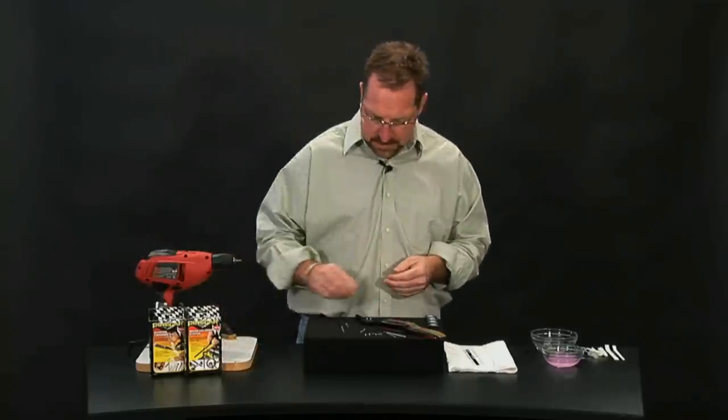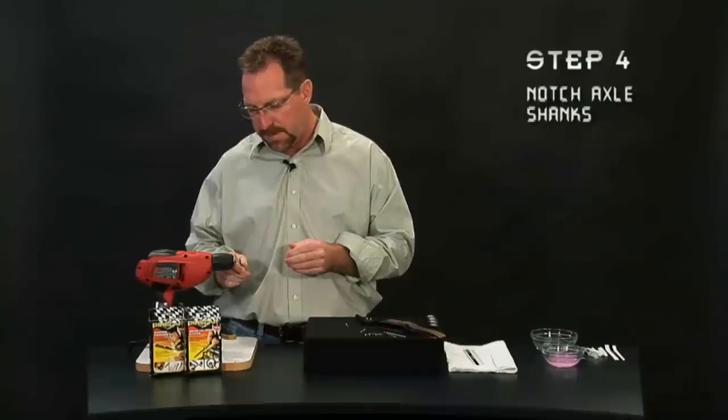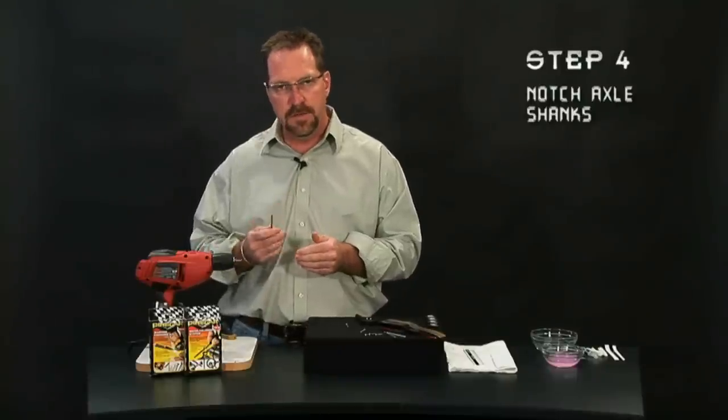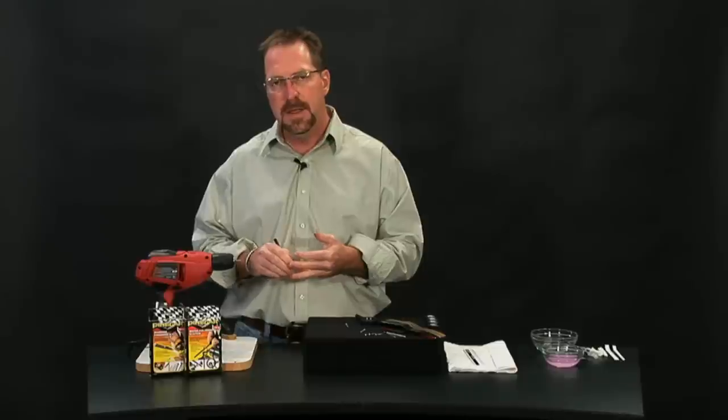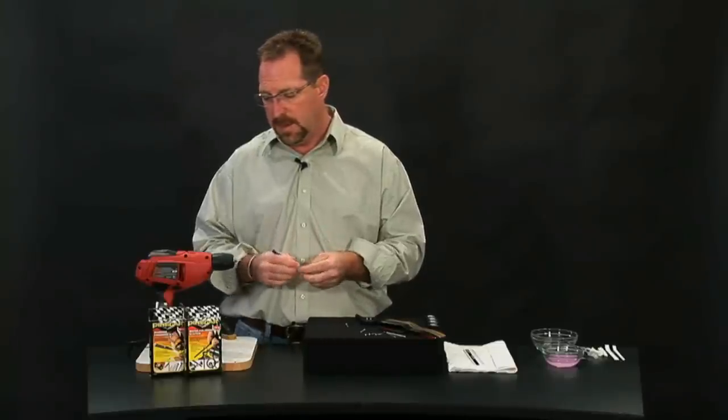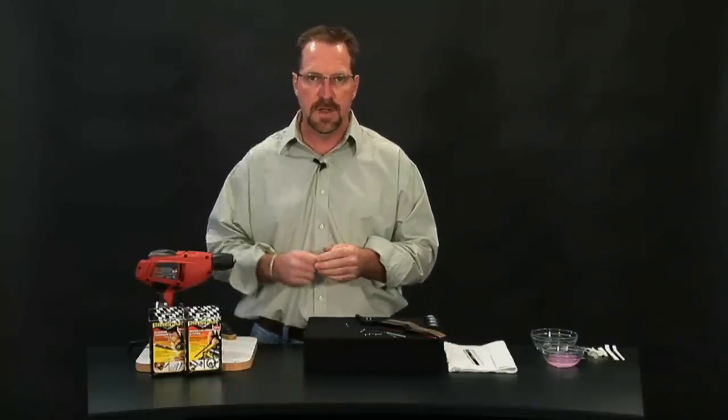All right, now the next step is going to be what we call notching out the axle. Basically what we're doing is we're going to be making a few marks on this axle, using our file to notch out that. That's going to reduce a lot of friction between your wheel hub and the axle shank itself. Now make sure your rule book will allow this tip. This is a great tip. It's going to pick up a lot of speed in your car, but again, we don't want you on the sidelines. So take the time to check out your local rule book.